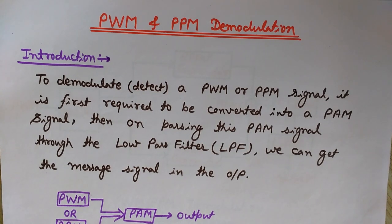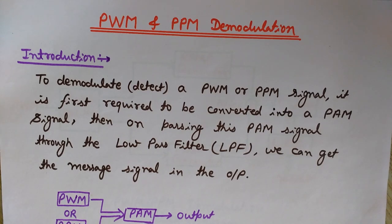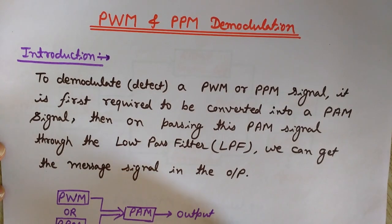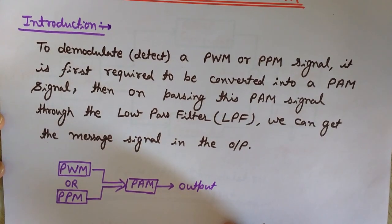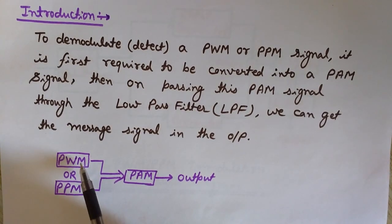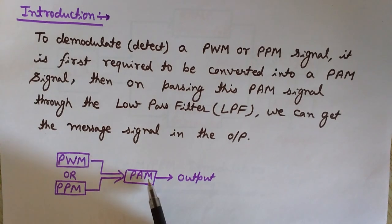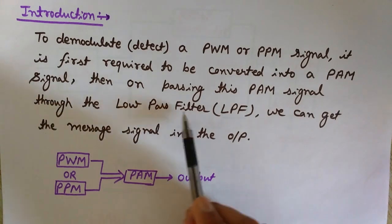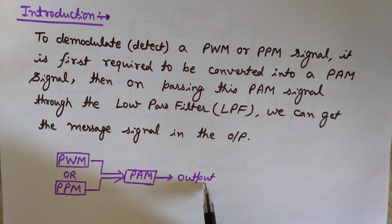Here we will see how we can demodulate or detect the PWM and PPM signal — how we can extract the message signal from these modulated signals. To demodulate a PWM or PPM signal, we first need to convert both kinds of signals into a pulse amplitude modulated (PAM) signal, then pass it through a low pass filter to get the message signal.